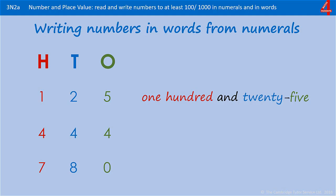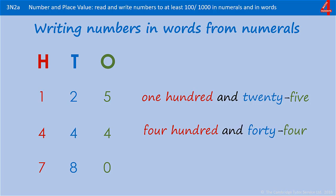For the next one, all four digits are the same. We have a four in the hundreds so that's 400, four in the tens so that represents 40, and four in the ones which is just four — four hundred and forty-four. Just notice the spelling of 40 there: it doesn't have a U in it.